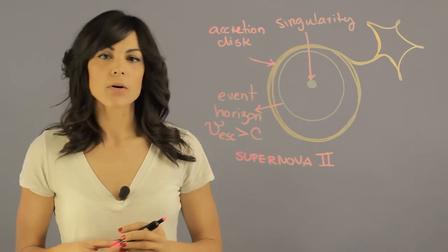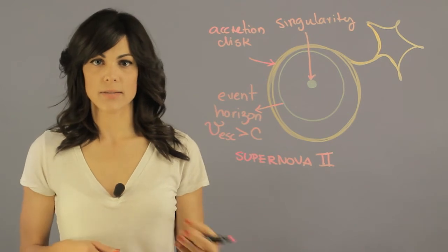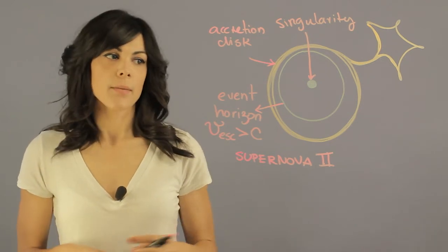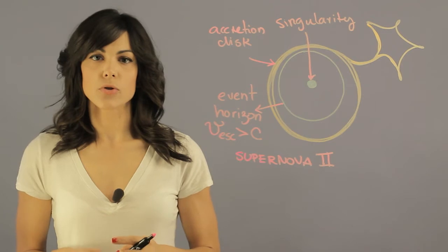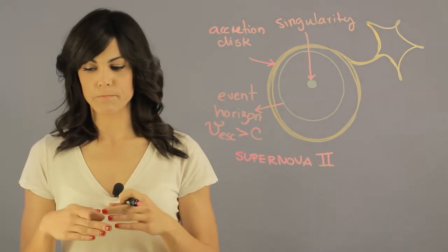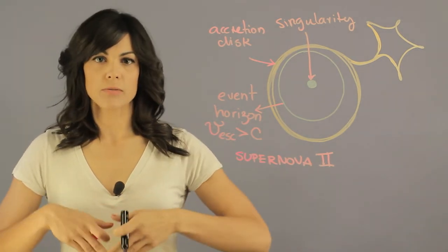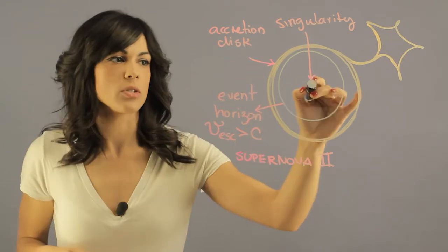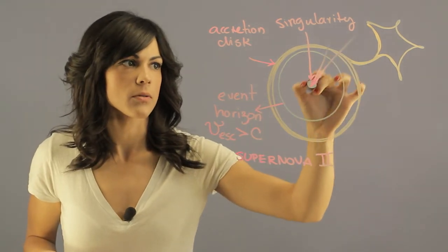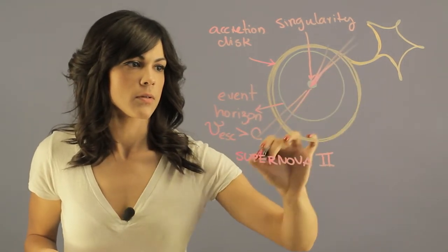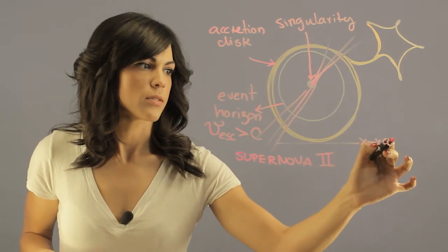Now, if the black hole is actually feeding, which means if that mass is actually falling into the black hole, passing the event horizon, you get this superheating phenomena which shoots out these jets. So you see all these jets come out of the black hole. X-ray jets.